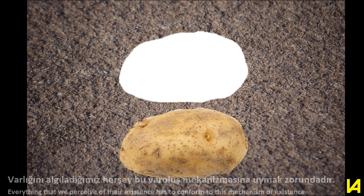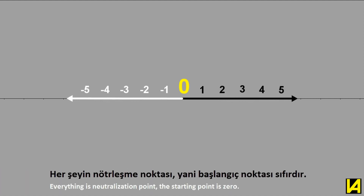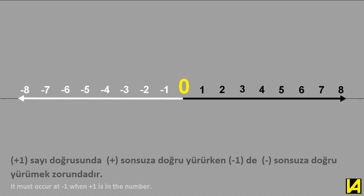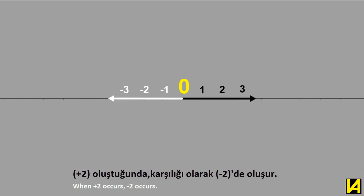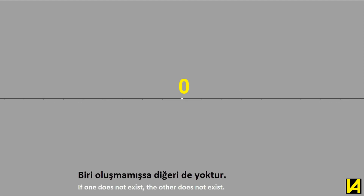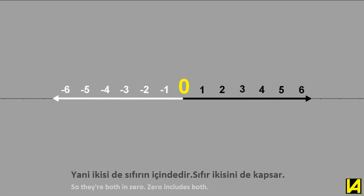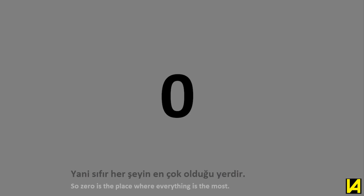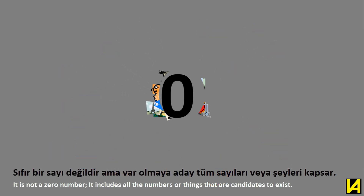Just like a growing potato — as the potato grows, the gap it forms grows too. Everything that we perceive must conform to this mechanism of existence. In order for something to exist as material, it needs to occur as a neutralizing opposition. Everything is a neutralization point; the starting point is zero. When plus one occurs, negative one occurs; when plus two occurs, negative two occurs. They depend on each other — if one does not exist, the other does not exist. The origin of both is zero.